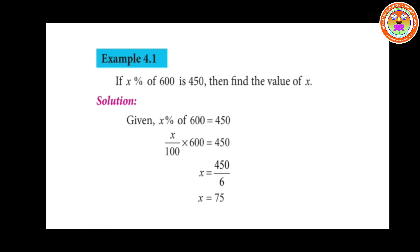Example 1: If x percentage of 600 is 450, find the value of x. x percentage can be written as x divided by 100. So, x divided by 100 into 600 equals 450. You can cancel 100 and 600 — 600 divided by 100 gives 6. So 6x equals 450, which gives x equals 450 divided by 6. Therefore, x equals 75.